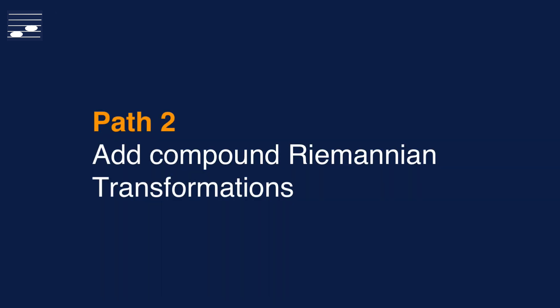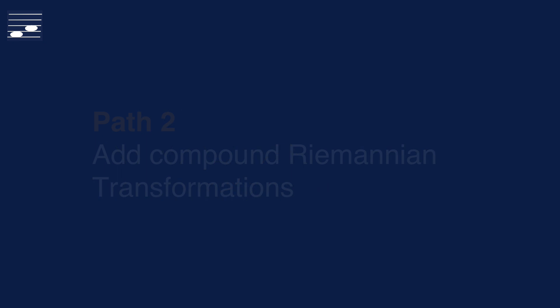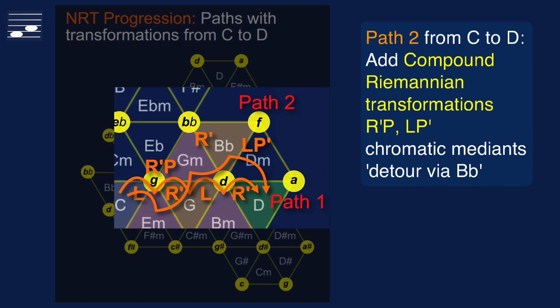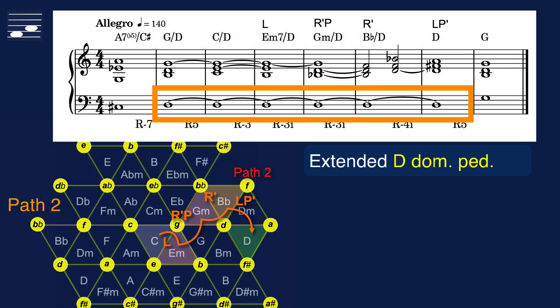The second path elaborates on this application concept, elongating the path from C to D in the Tornetz by using compound Riemannian transformations. This path leads us along the somewhat remote major triad on Bb. We obtain the extended D-dominant pedal point shown here.